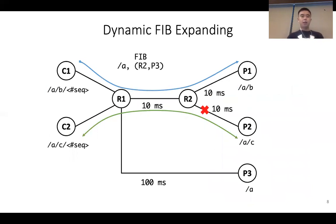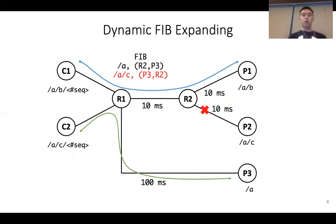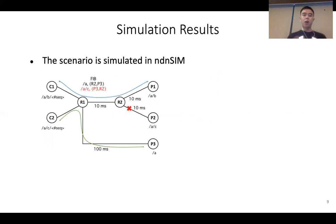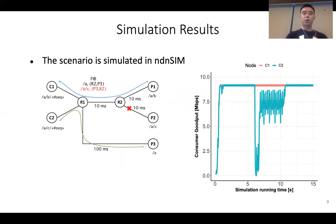The key idea of this paper is dynamic FIB expanding. We expand the current FIB name from /A to /A/C with a new ranking, allowing R1 to change the green flow to a different path while leaving the blue flow unchanged. We simulated this scenario in ndnSIM with a modified ASF strategy where we hard-coded this name prefix and ranking. After the link failure, C2 is forwarded to an alternative path and over time reaches full bandwidth utilization, proving this approach solves the problem.